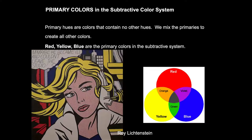The most important colors in our system are the primary colors. Primary hues are colors that contain no other hues. We mix these primaries to create all the other colors. Red, yellow, and blue, of course, are the primaries in the subtractive color system.